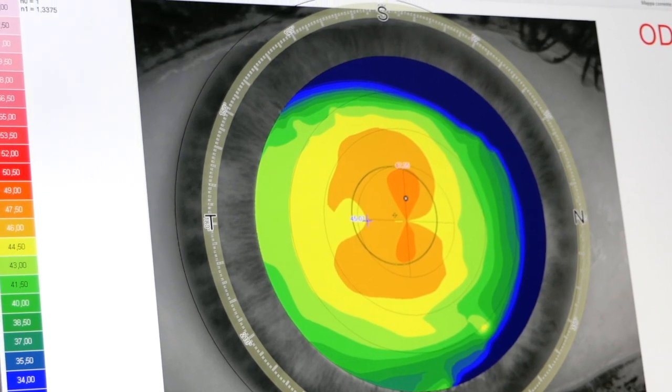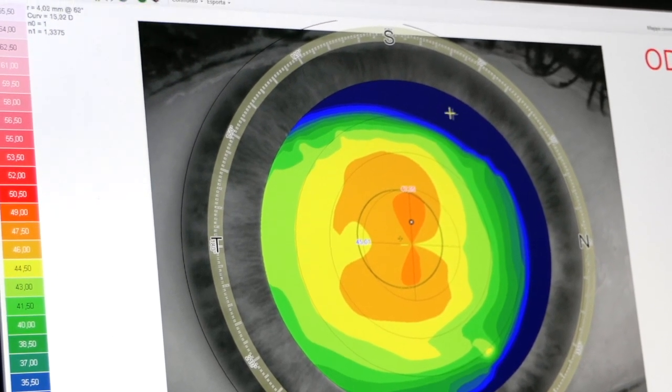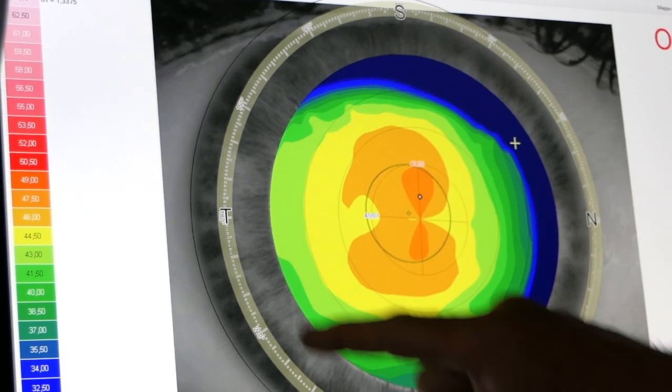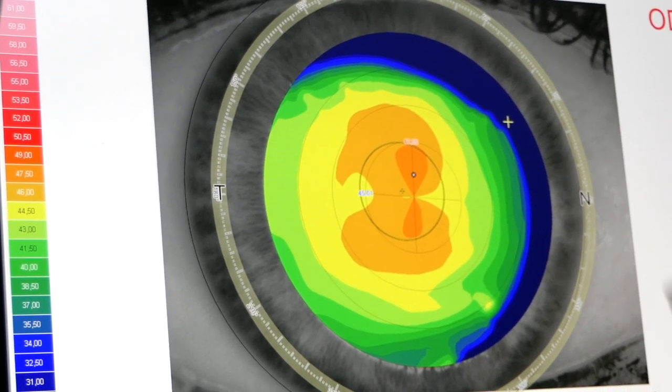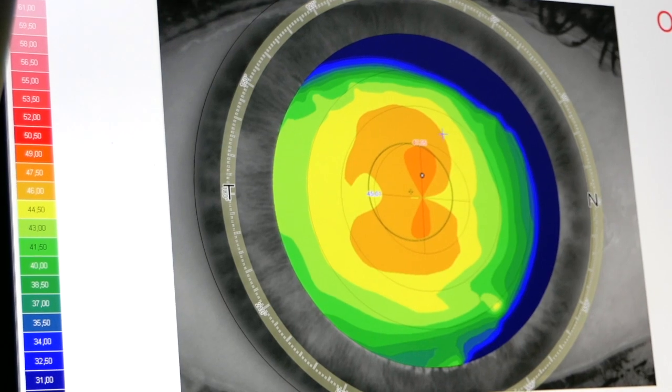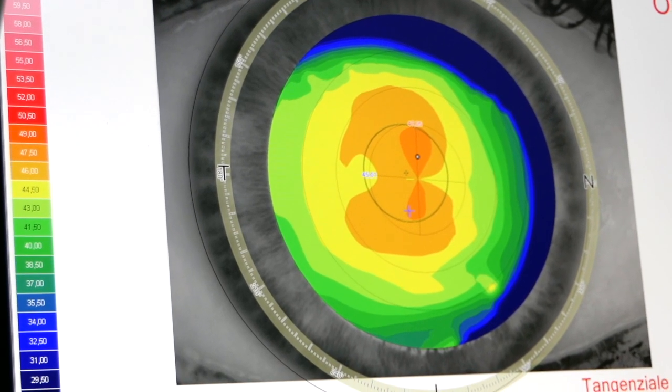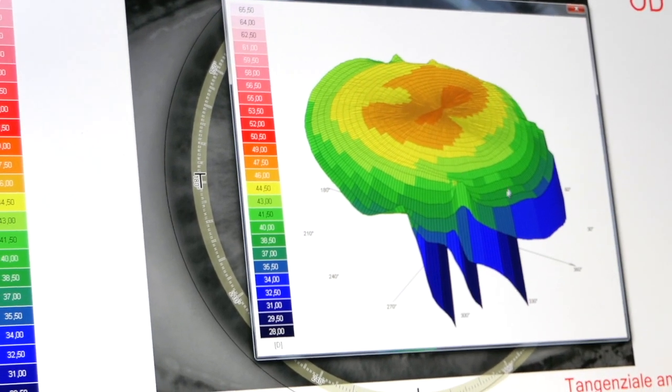Therefore, we have a cornea that is flatter in the periphery, the outer part, which then goes to merge with the white part of the eye that is flatter, while the central part is more curved.